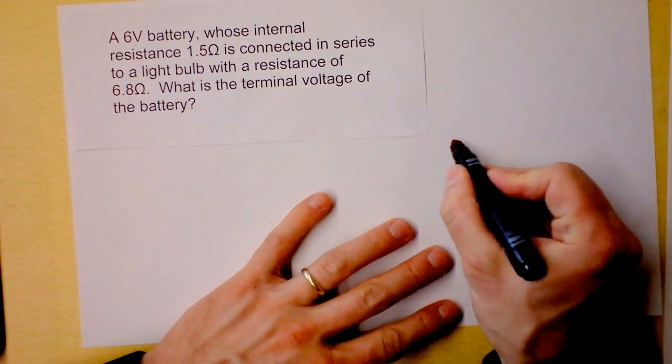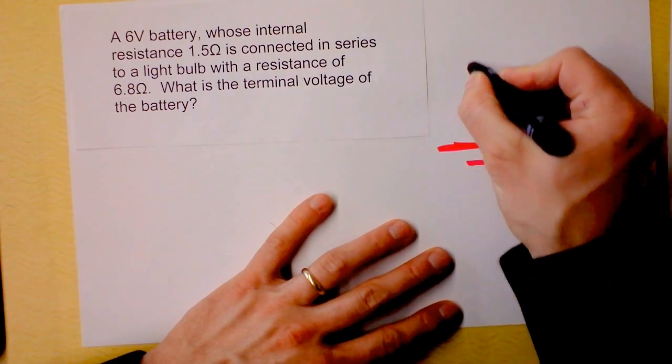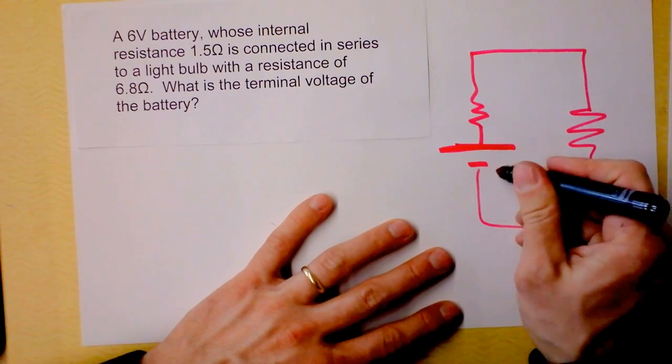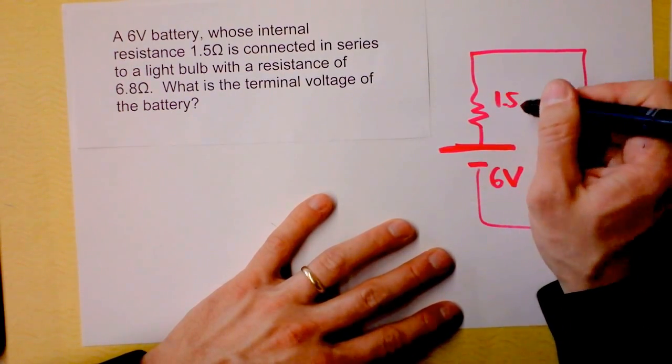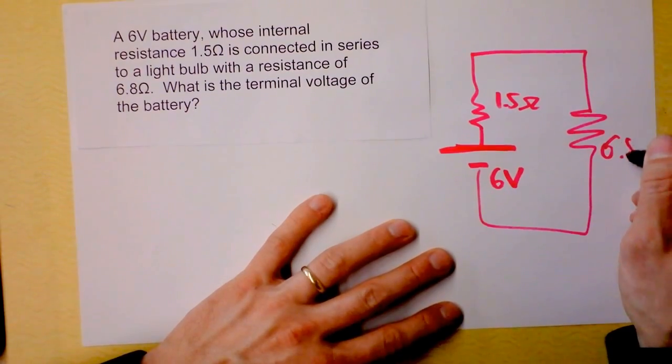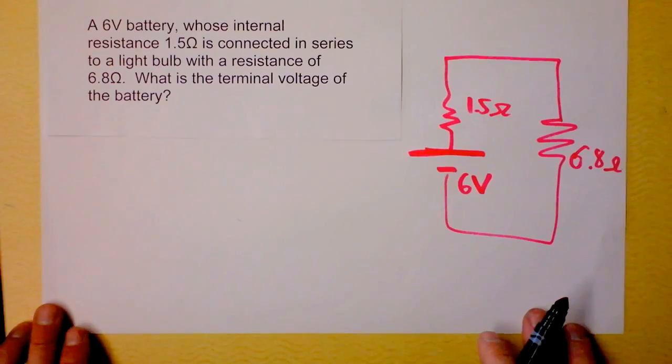They want to know for the same circuit, what's the terminal voltage of the battery? So we'll put a battery here, New Jersey. We got you. There's an internal resistance. There's some other stuff going on here. So I'm going to put this in. 6 volts, 1.5 ohms. And this baby right here, this is 6.8 ohms. And check to make sure that you can see what's going on. Great. I can see what's going on.